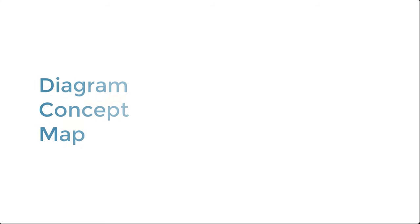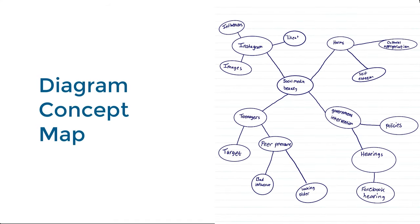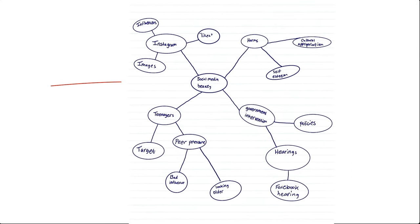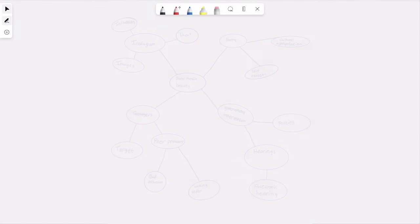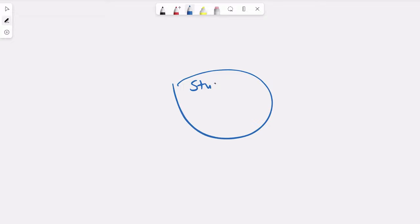In this tutorial we are going to go over one main concept map type, the diagram. A diagram concept map helps you connect your initial topic with other ideas. Begin by writing your main topic in a bubble or square in the center of the page. We are going to use the topic student success.